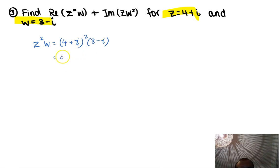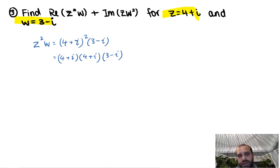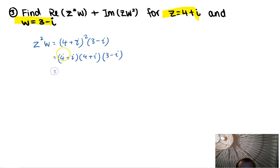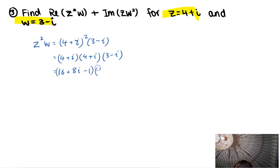4 plus i squared is the same as 4 plus i times 4 plus i, times 3 minus i. Depending on how comfortable you are with squaring a bracket, you might not need to write this line, but I will. 4 times 4 is 16. 4 times i is 4i, and again 4 times i is 4i, so adding them gives 8i. And i times i is i squared, which is negative 1. Simplifying: 16 minus 1 is 15 plus 8i.